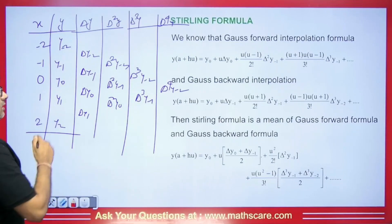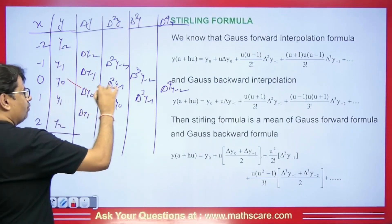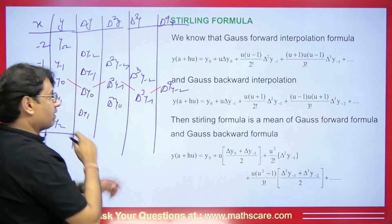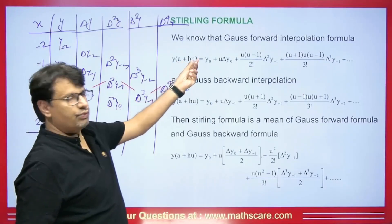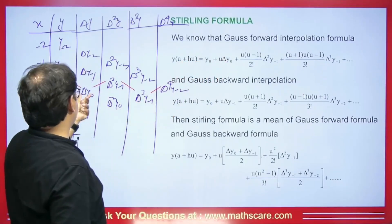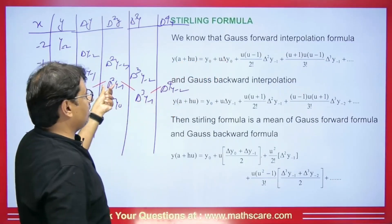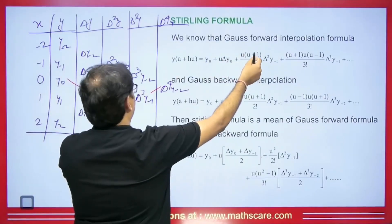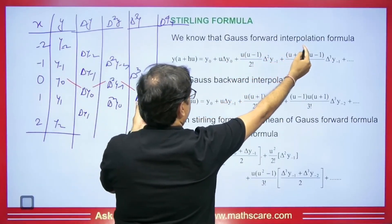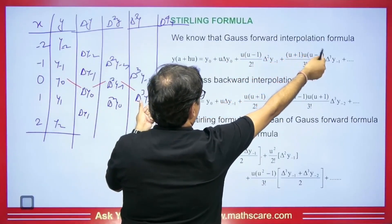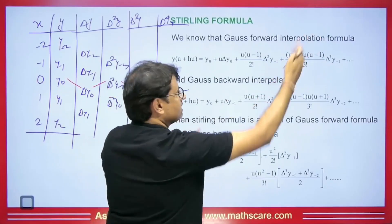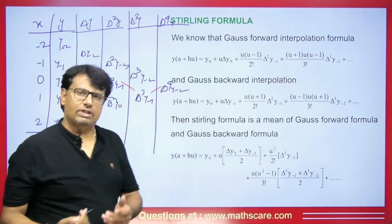In Gauss forward, what we do? We go forward like this. The formula is: y(a + hu) = y₀ + u·Δy₀ + [u(u−1)/2!]·Δ²y₋₁ + [(u+1)u(u−1)/3!]·Δ³y₋₁, and then this term continues.